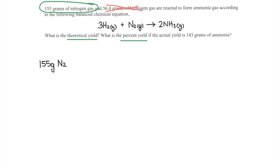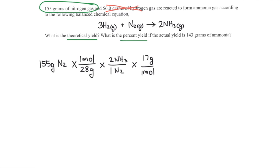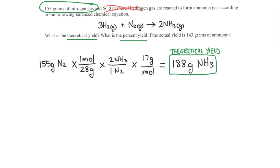We take the mass of nitrogen — 155 grams — divide by its molar mass of 28 grams per mole, multiply by the mole ratio of 2 over 1, and then convert to grams of ammonia by multiplying by its molar mass of 17 grams per mole, to give a theoretical yield of 188 grams.